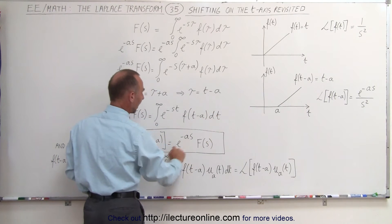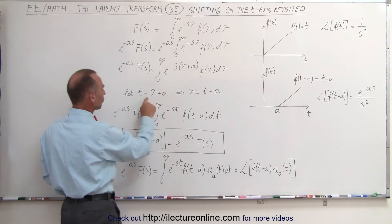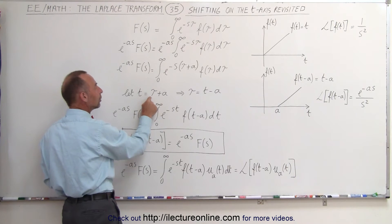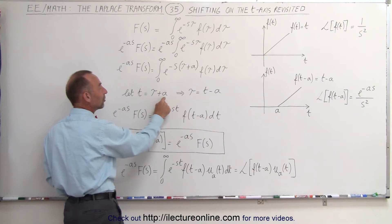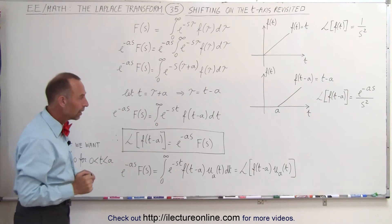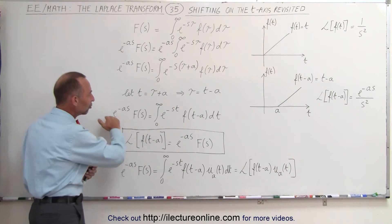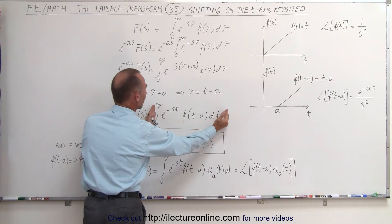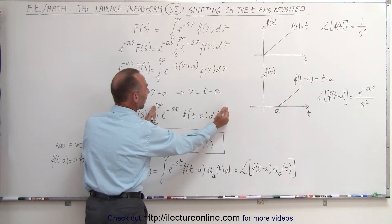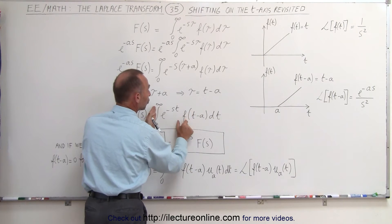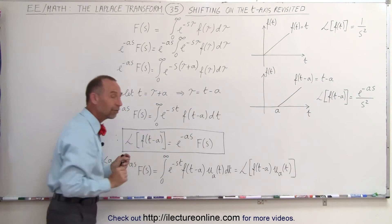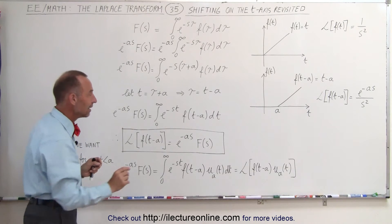Notice that when we take the derivative of both sides, dt will equal d tau because a is simply a constant. Now notice this should look very familiar to you, especially this side right here. This looks like the Laplace transform for the function t minus a, not for the function t.